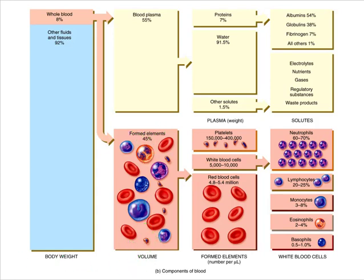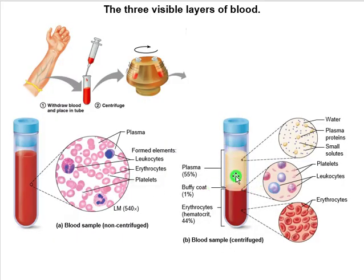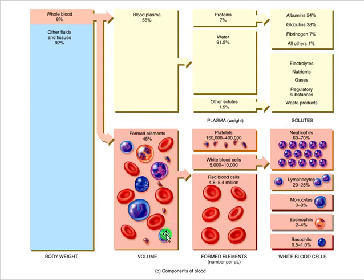If you're looking closely, plasma is 55% and formed elements are 45%. In the centrifuged image, it's 55% plasma, 44% erythrocytes, and 1% Buffy coat including those other things. The Buffy coat plus the erythrocytes together are the so-called formed elements.